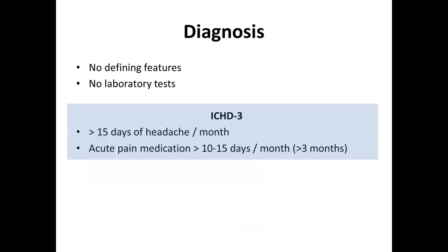Diagnosing medication overuse headache can be quite tricky because there are no defining features. Patients typically complain of headache that mirrors their underlying primary headache disorder. For example, patients who develop migraine and over the years take more and more painkillers as migraine frequency increases will develop medication overuse headaches that mirror their migraine. Frustratingly, there are no specific clinical features apart from the knowledge that the person is taking too many painkillers, and there are certainly no laboratory tests which can help make the diagnosis.